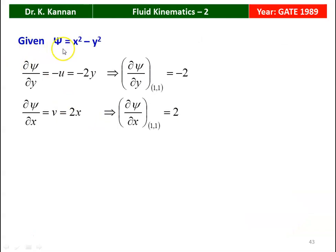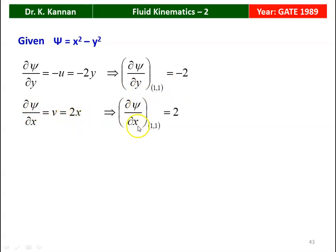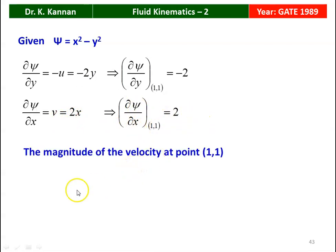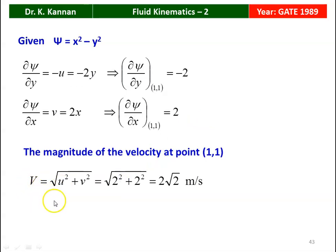Given ψ = x² − y²: ∂ψ/∂y = −u = −2y, so at (1,1), u = 2. And ∂ψ/∂x = v = 2x, so at (1,1), v = 2. The magnitude of velocity = √(u² + v²) = √(2² + 2²) = 2√2.